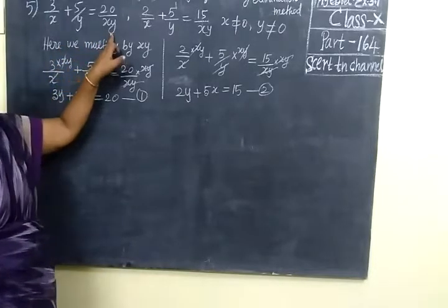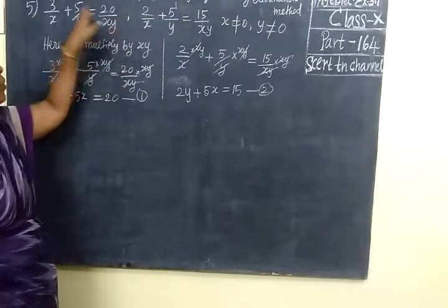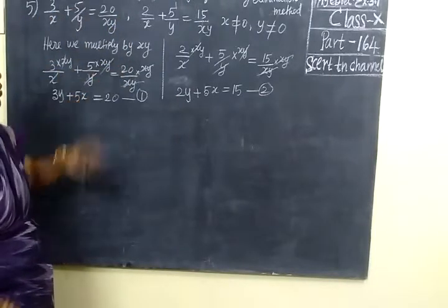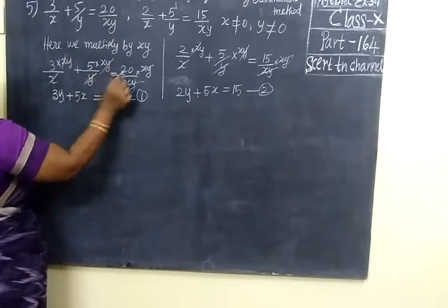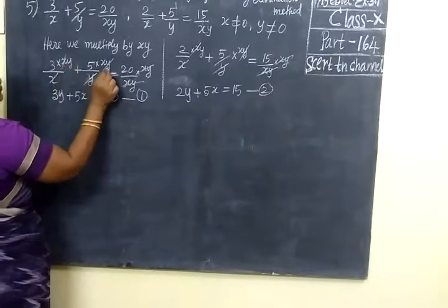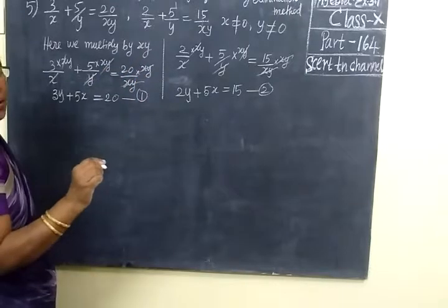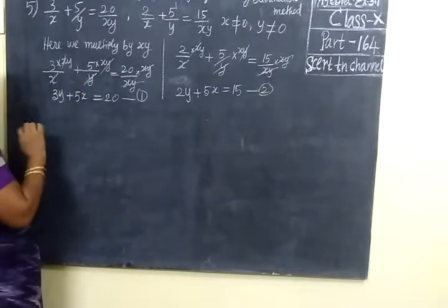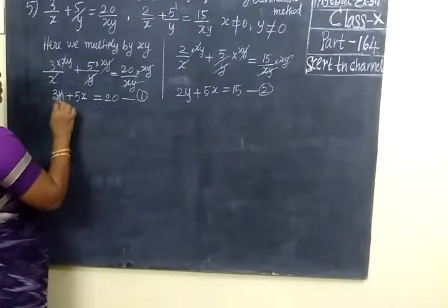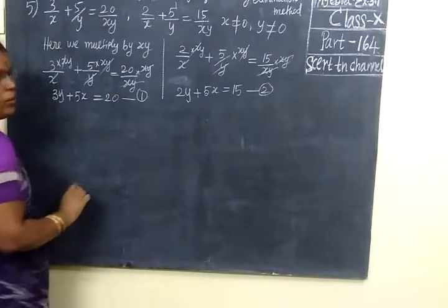Now xy cancel on. So denominator is y, throughout xy multiply, xy cancel on. So here we multiply by xy, so numerator is xy xy, we want to cancel xy. For that you are multiplying throughout xy xy, then xy cancel like this. We are getting 3y plus 5x equal to 20, the equation 1.